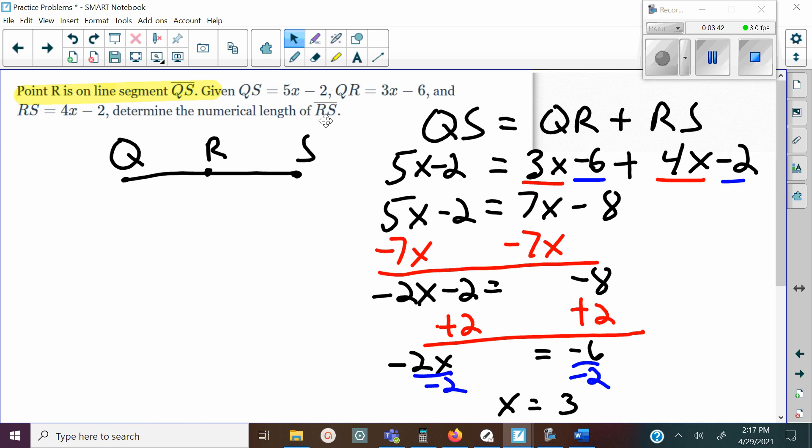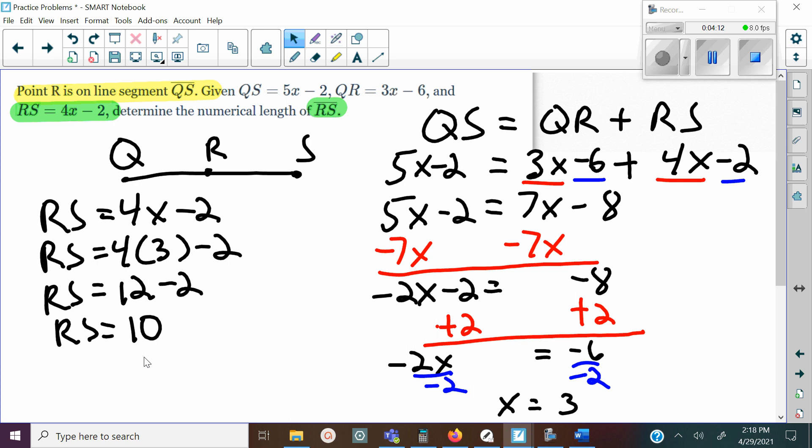But that's not the answer because we're looking for RS. So to get RS, what we're going to do is use this expression here - that's what RS is. We're going to write that out and plug in the 3 in for x. Then we're going to do 4 times 3 to get 12, and just subtract 2 to get 10. So RS, the actual measure length of RS, is 10.